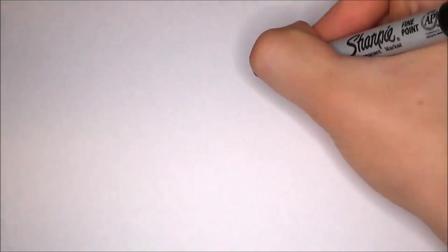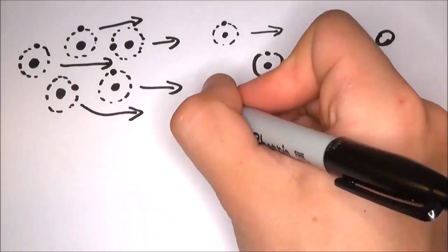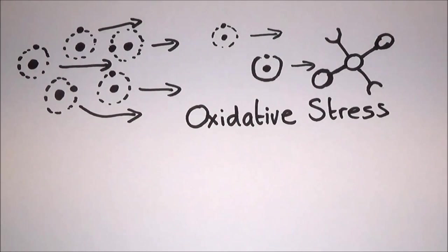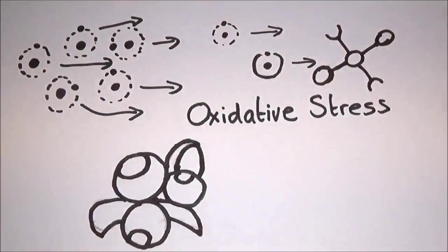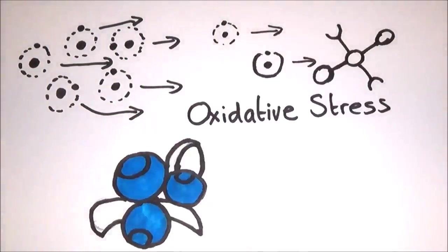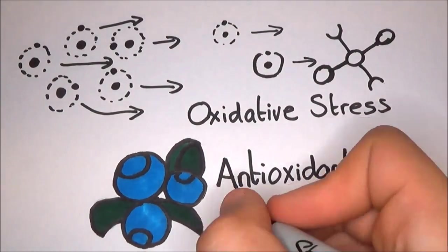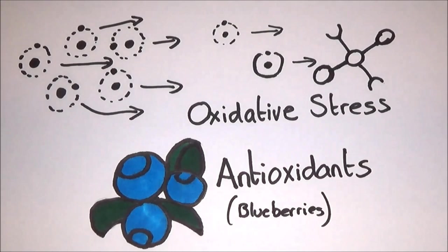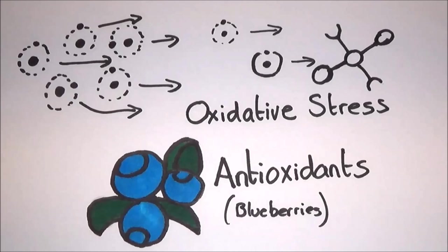If too many free radicals are produced, the body's natural protective mechanisms can't handle the onslaught and damage can occur. This is known as oxidative stress and builds up as you get older. Taking in extra antioxidants from foods such as blueberries is thought to help neutralize these free radicals. However, more research is still needed before we can say for sure that consuming antioxidants can prevent disease or extend life.